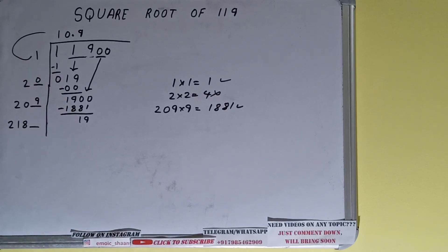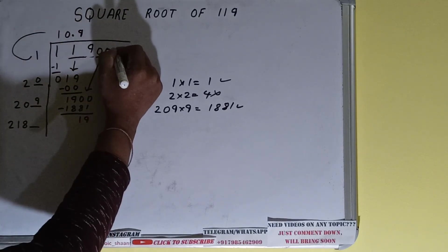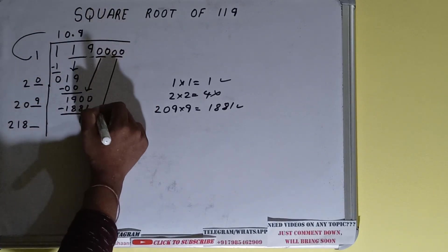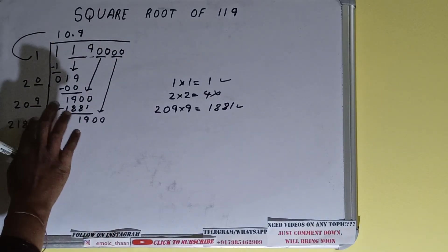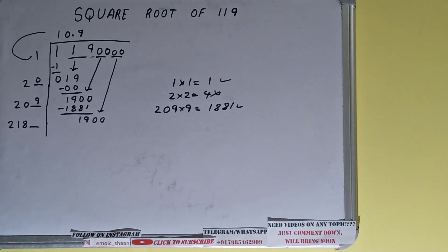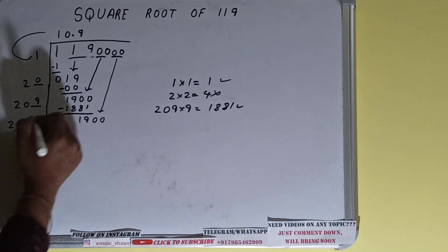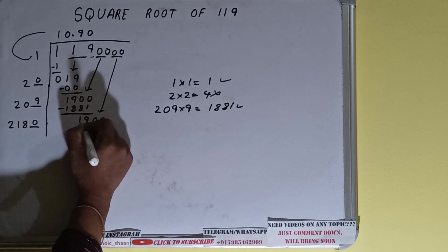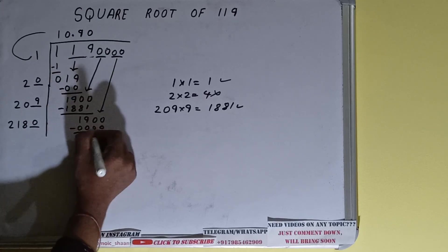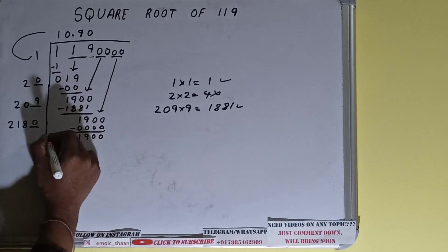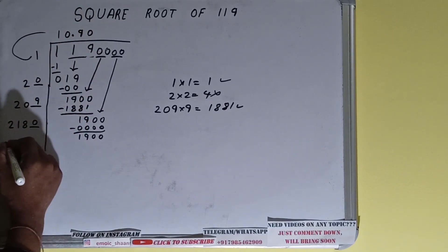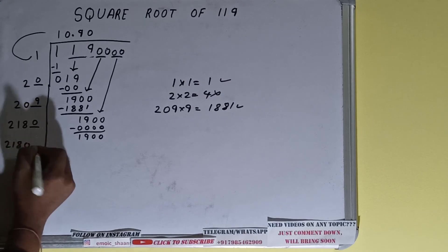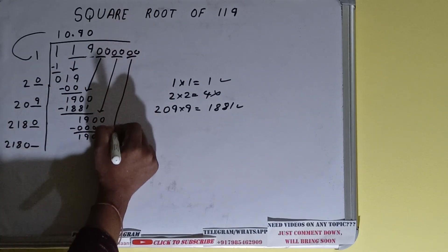We bring down one more pair of zeros, making the number 1900. If we use even 1 here, the result will be greater than 1900, so we use 0. Subtracting gives 1900 again. Then 2180 plus 0 equals 2180, keeping one extra digit, and we bring down one more pair of zeros.